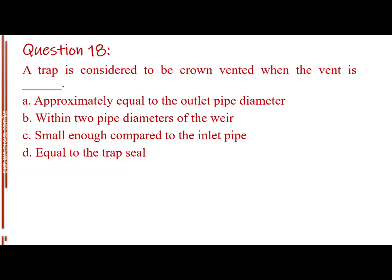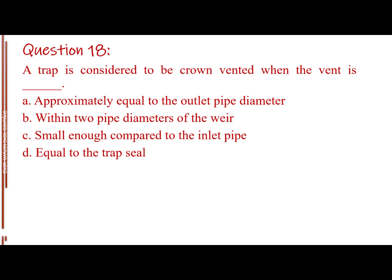Question number 18. A trap is considered to be crown vented when the vent is blank. Letter A, approximately equal to the outlet pipe diameter. Letter B, within two pipe diameters of the weir. Letter C, small enough compared to the inlet pipe. Letter D, equal to the trap seal. The answer is Letter B, within two pipe diameters of the weir.